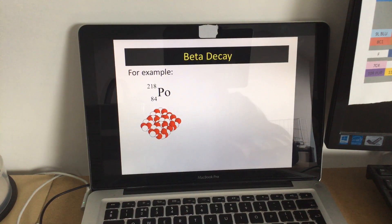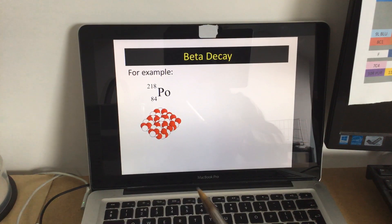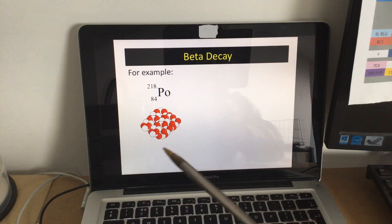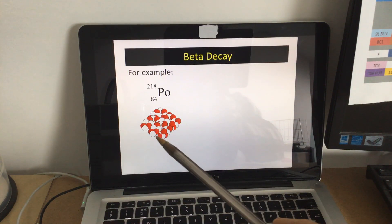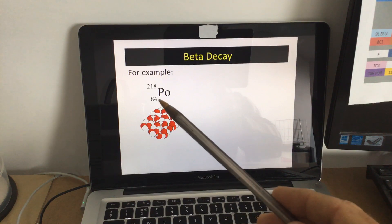A proton, one of these protons suddenly decides, sorry, one of the neutrons, one of the neutrons here, suddenly decides it wants to be a proton. It turns into a proton, so there is one more proton. It's the same number altogether, but one of the whites has turned into a red. So this number has to go up, this tells you how many protons, so that would go up to 85.